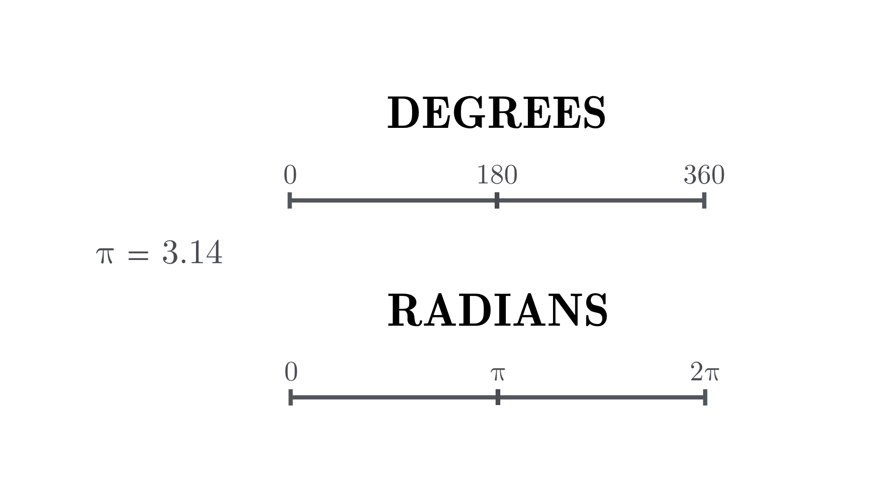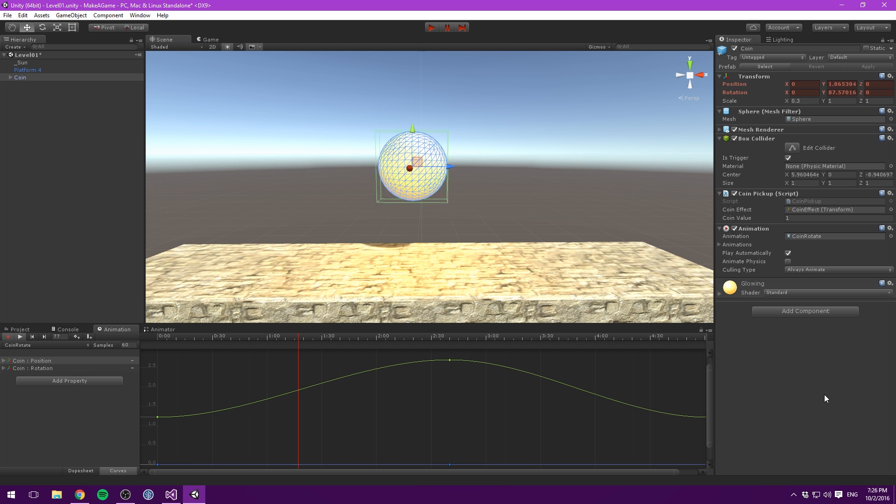So let's have a look at a practical example where sine waves come in handy. Say that we want to create a cool hover animation for a coin. Whenever we want to animate something over time, we simply use the amount of seconds passed since we started the game as input for our sine function. So in this case, we could set the y position of our coin equal to the sine of t, where t is time.